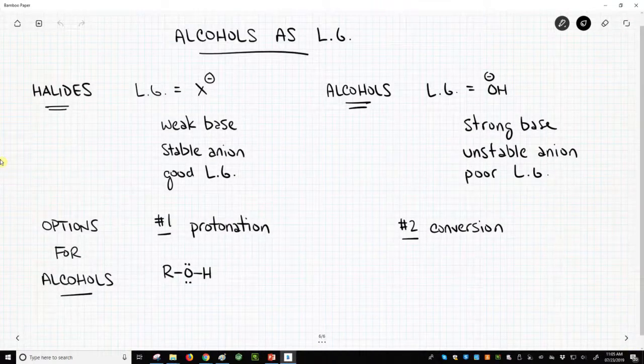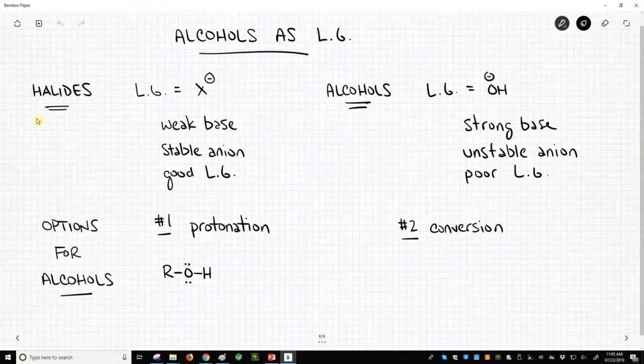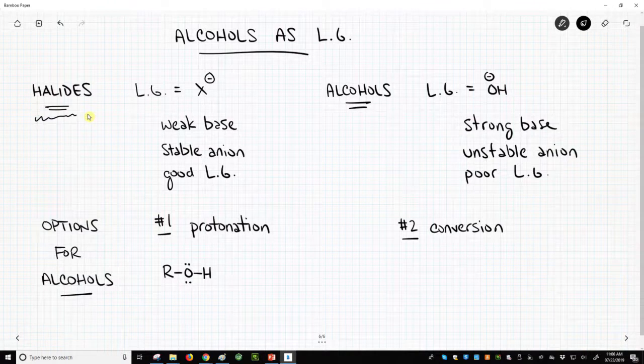Now, we've certainly seen leaving groups before. Halides make really good leaving groups. Halides leave as an anion, bromide or chloride or iodide.